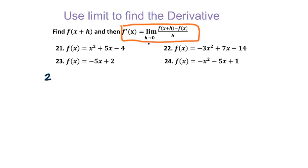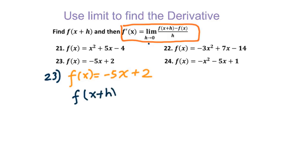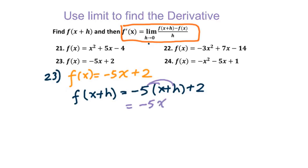We will work on problem 23 first. We have f(x) = -5x + 2. First, we need to figure out f(x + h). That means every single x turns into x + h. Therefore, we get -5(x + h) + 2. Using the distributive property, we get -5x - 5h + 2.